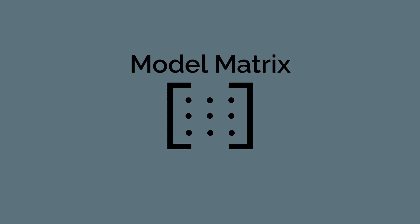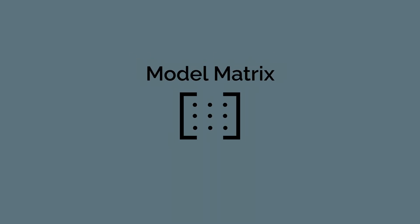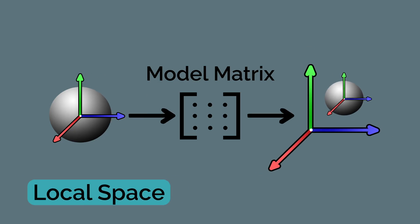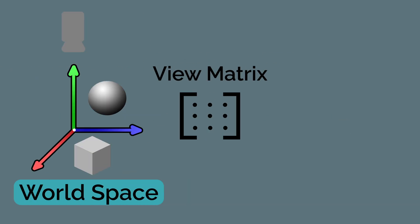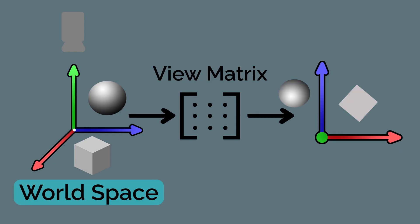Before moving on to the three-dimensional world, let's briefly talk about the spaces and matrices used in 3D rendering. The model matrix contains information about the position and orientation of our object. Using the model matrix, we transform the coordinates of our object relative to its local origin to world coordinates in world space. In world space, we can have multiple objects with different positions and orientations defined by their very own model matrices.